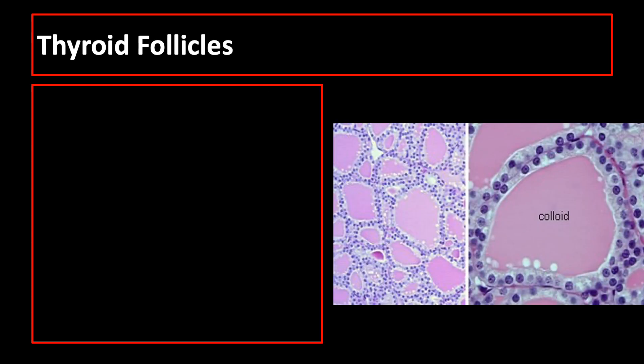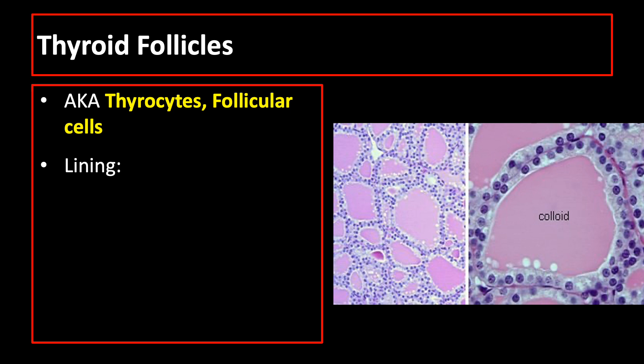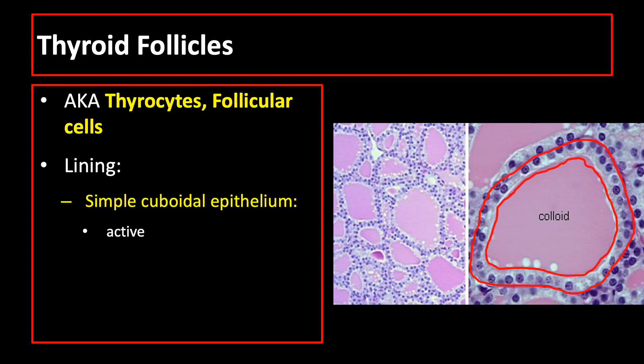The parenchyma of the thyroid is composed of millions of rounded epithelial thyroid follicles, also known as thyrocytes or follicular cells. The lining epithelium of the thyroid follicle is generally simple cuboidal epithelium if it is active, and simple squamous epithelium if it is hypoactive.